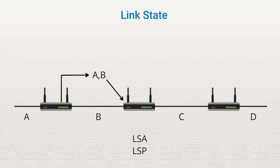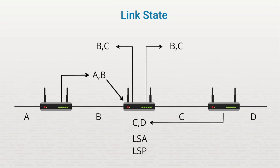Likewise, the second router would share information in each direction about its connected routes, advertising that it knows about networks B and C. The third router would do the same, sending information about networks C and D to its neighbors, which would then forward that information throughout the network. The process of sending LSAs and LSPs through the network is called flooding because a single packet is flooded, or forwarded, throughout the entire network. Routers use these advertisements to build a database, or a topology, of the network within its own routing table. Eventually, each router will learn about every other network. Once convergence has been reached, these advertisements would contain only changes instead of all directly connected networks.